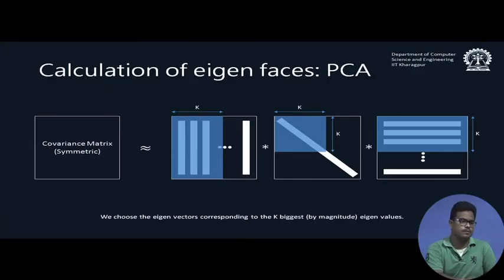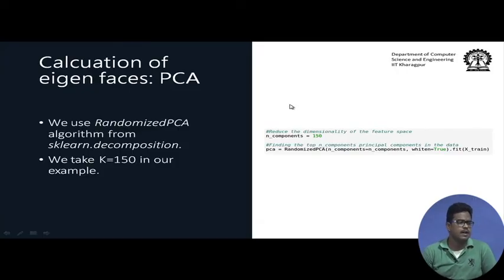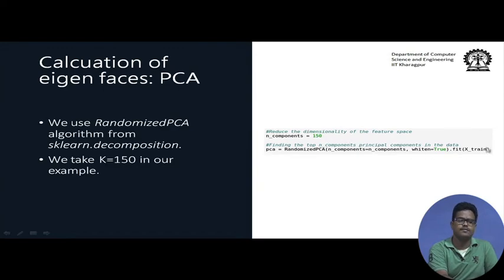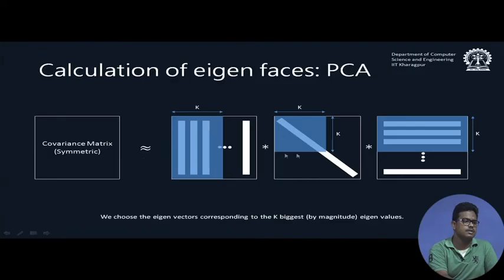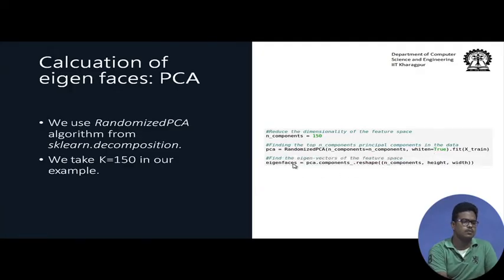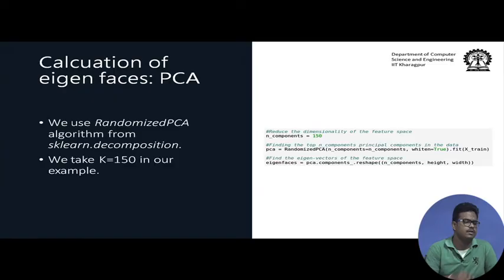Now we implement this in code. The randomized PCA algorithm of scikit-learn provides an efficient implementation. We set the number of components to 150, initialize a PCA model with n_components=150, and fit it on the training data. This handles all the steps: mean normalization, SVD, and component selection. We can then visualize the eigenfaces — the eigenvectors are stored in the model and retrieved as pca.components_, reshaped to height×width for display.